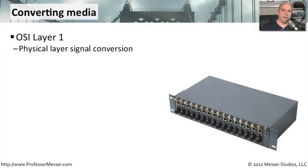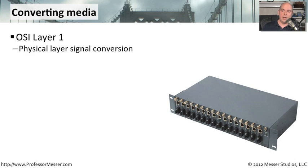If you are converting media from one type to another, you're usually doing this at OSI Layer 1 — the signaling layer of that media connection. So usually you're not worrying about MAC addresses, IP addresses, switching, or routing. We are simply taking one type of signal and reconstructing it into a different type of signal, sending it over a different type of media.